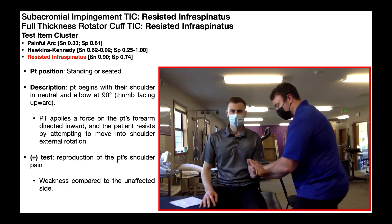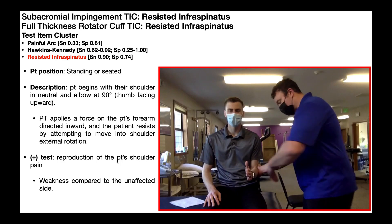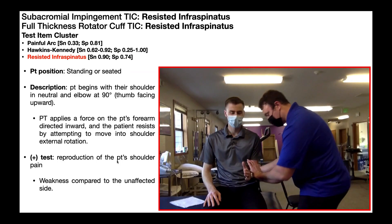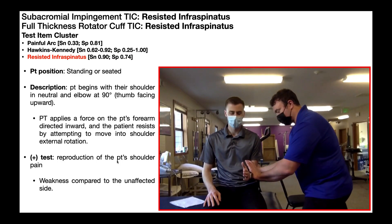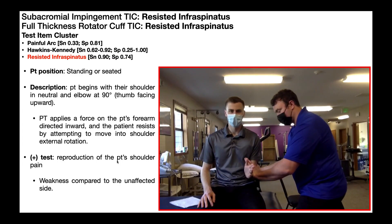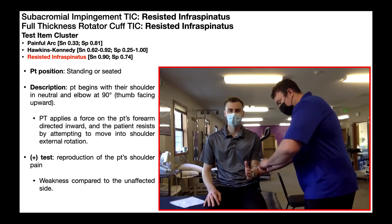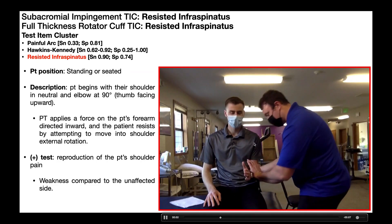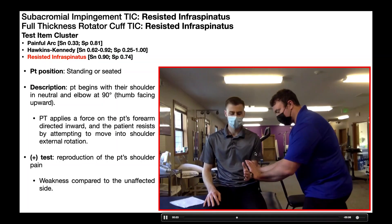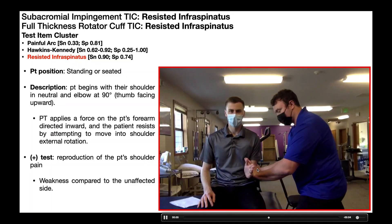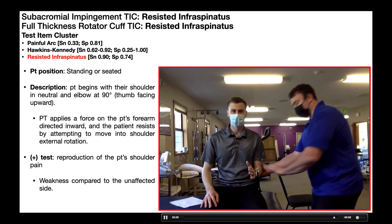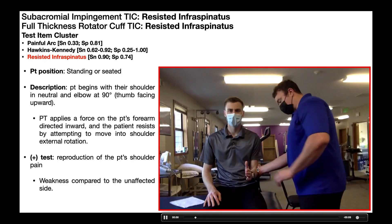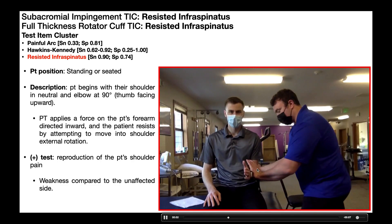Obviously this would be a negative test because there was no weakness and no pain reported with this force. One more thing — when you're doing this test, make sure that the patient's arm and elbow stays against their side. Sometimes if there's weakness or extreme pain, they may compensate by allowing their forearm to come in but then their arm flares out.